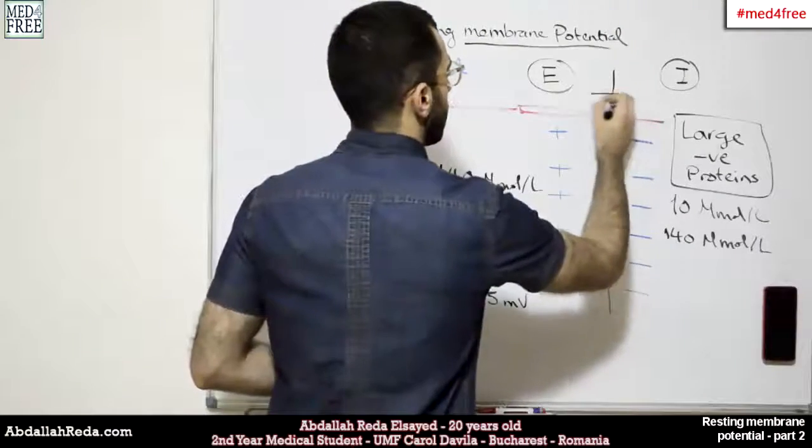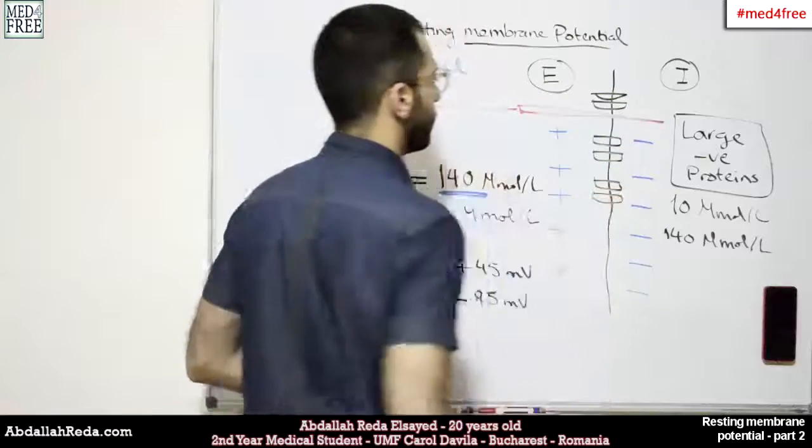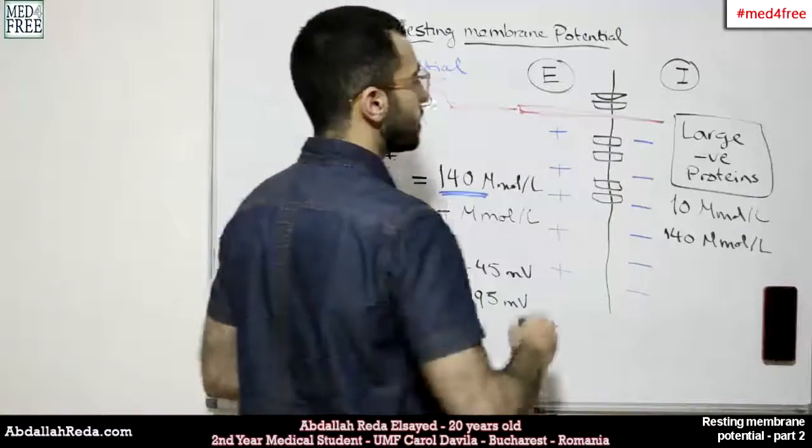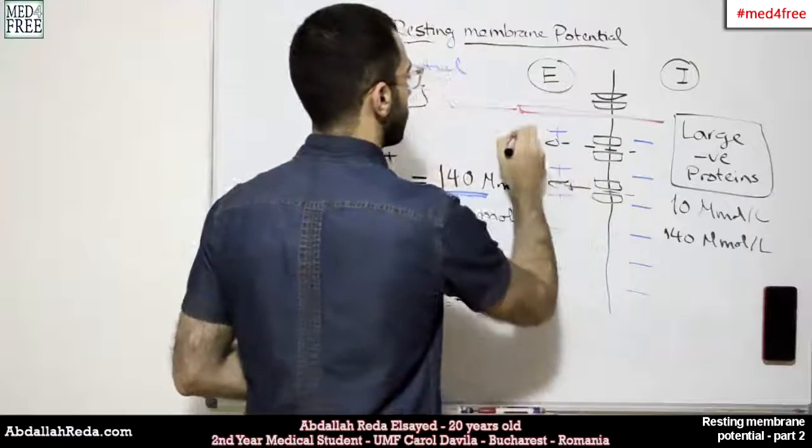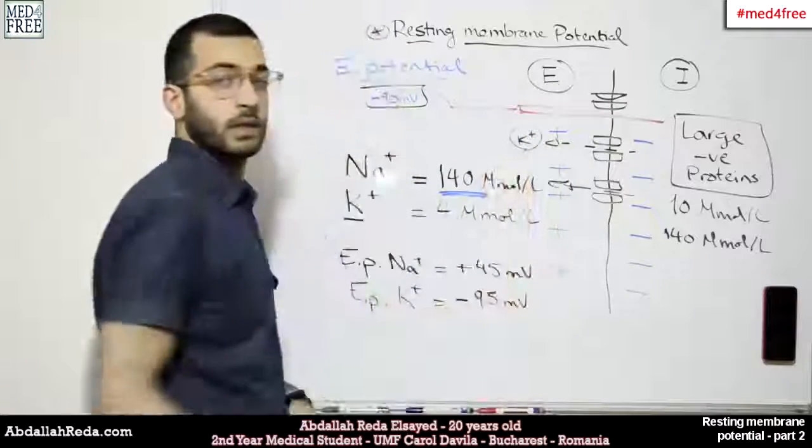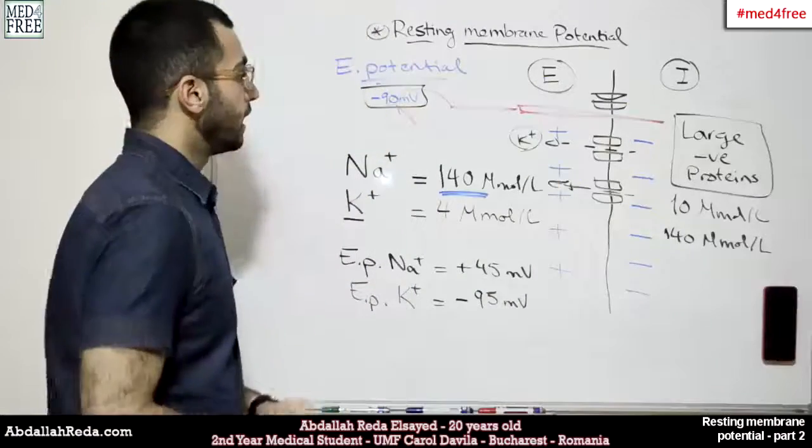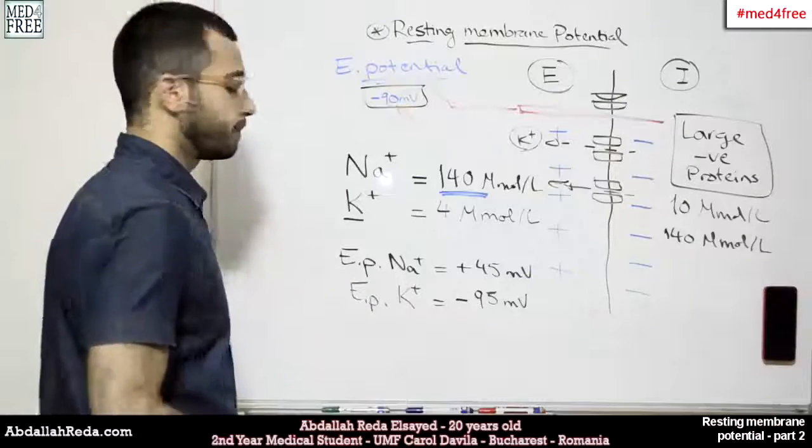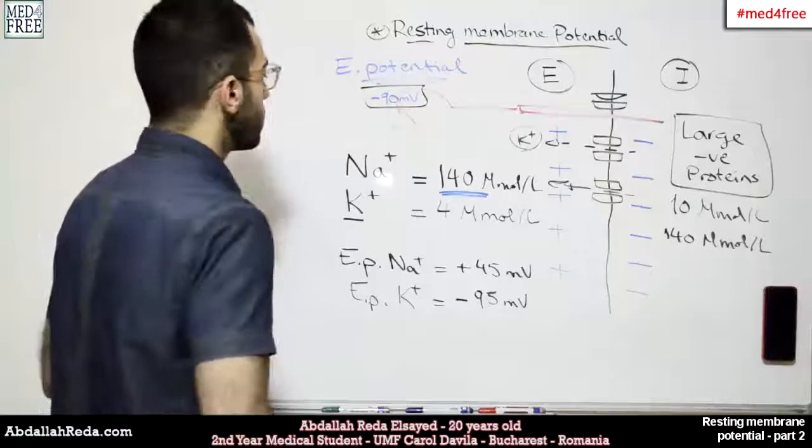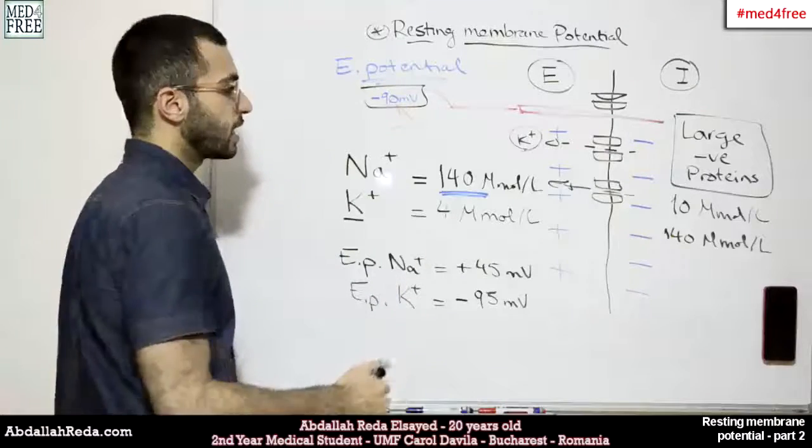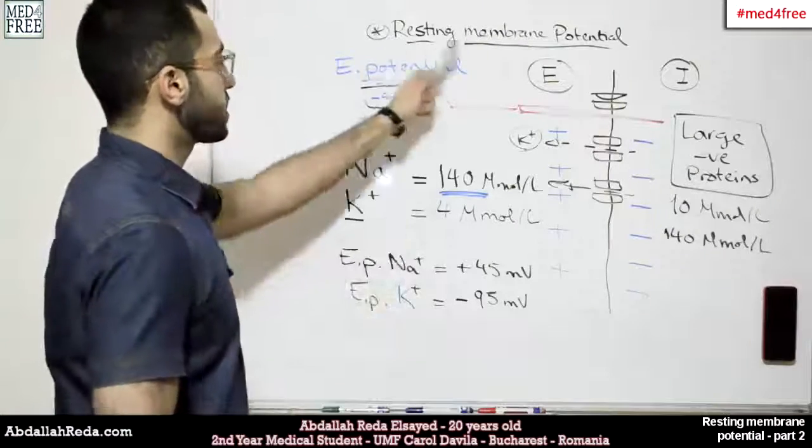along the cell membrane we have these channels called potassium leakage channels. All the time, potassium is leaking outside the cell, and this action keeps the flow of potassium in equilibrium. This is why potassium is a very critical ion to the resting membrane potential.